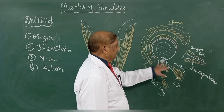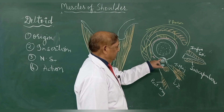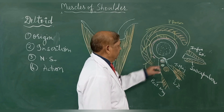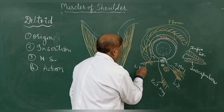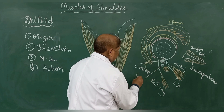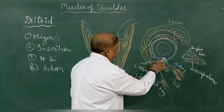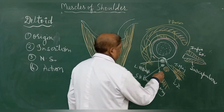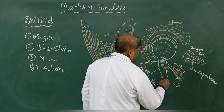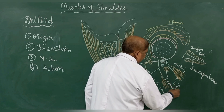In the groove itself, between these muscles, you can see the tendon of the long head of the biceps, which is surrounded by the synovial membrane as an extension from the shoulder joint. This is the long head of the biceps tendon, and naturally this is the short head of the biceps muscle. In front of and lateral to these tendons is the muscle called the coracobrachialis.